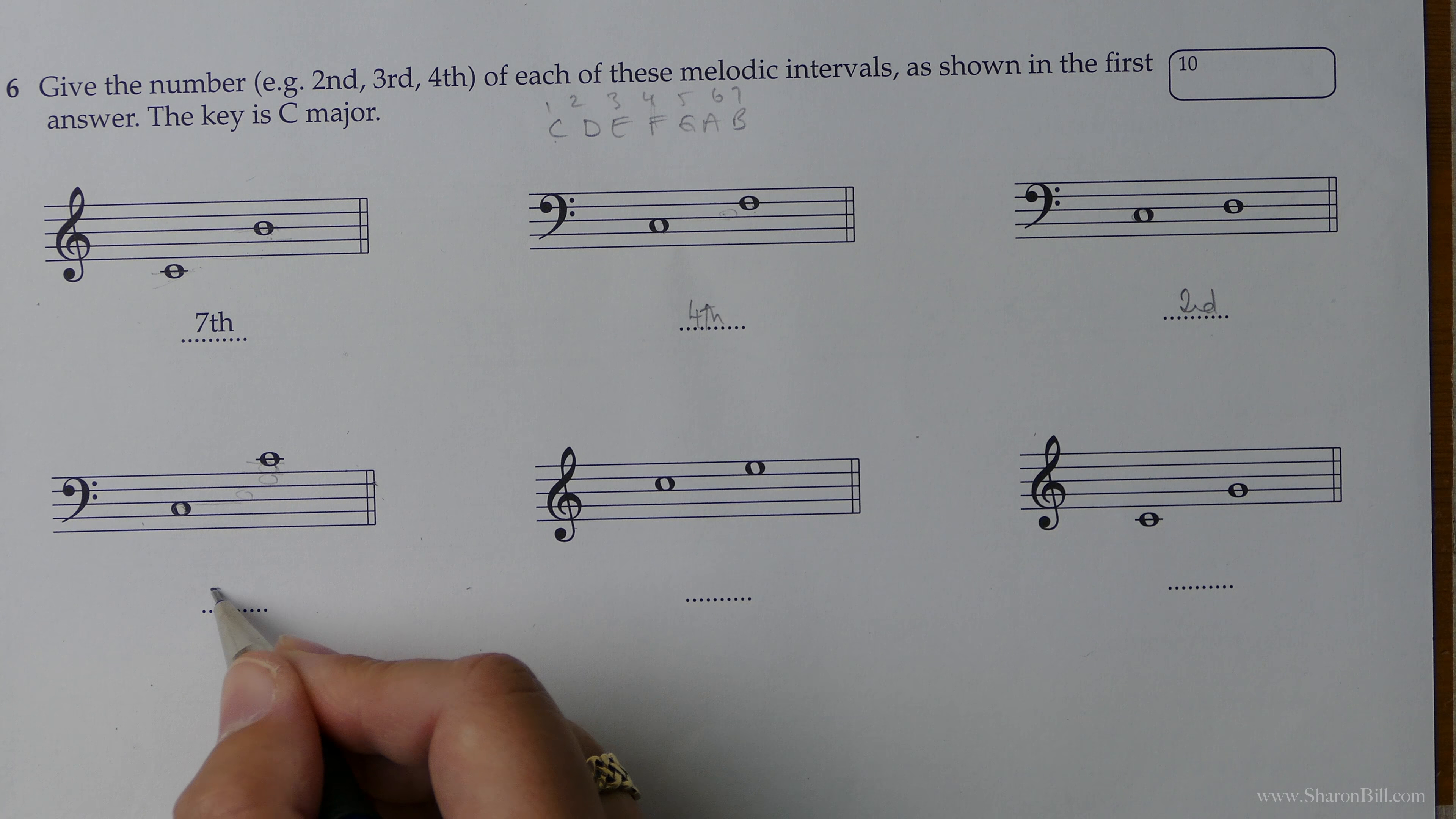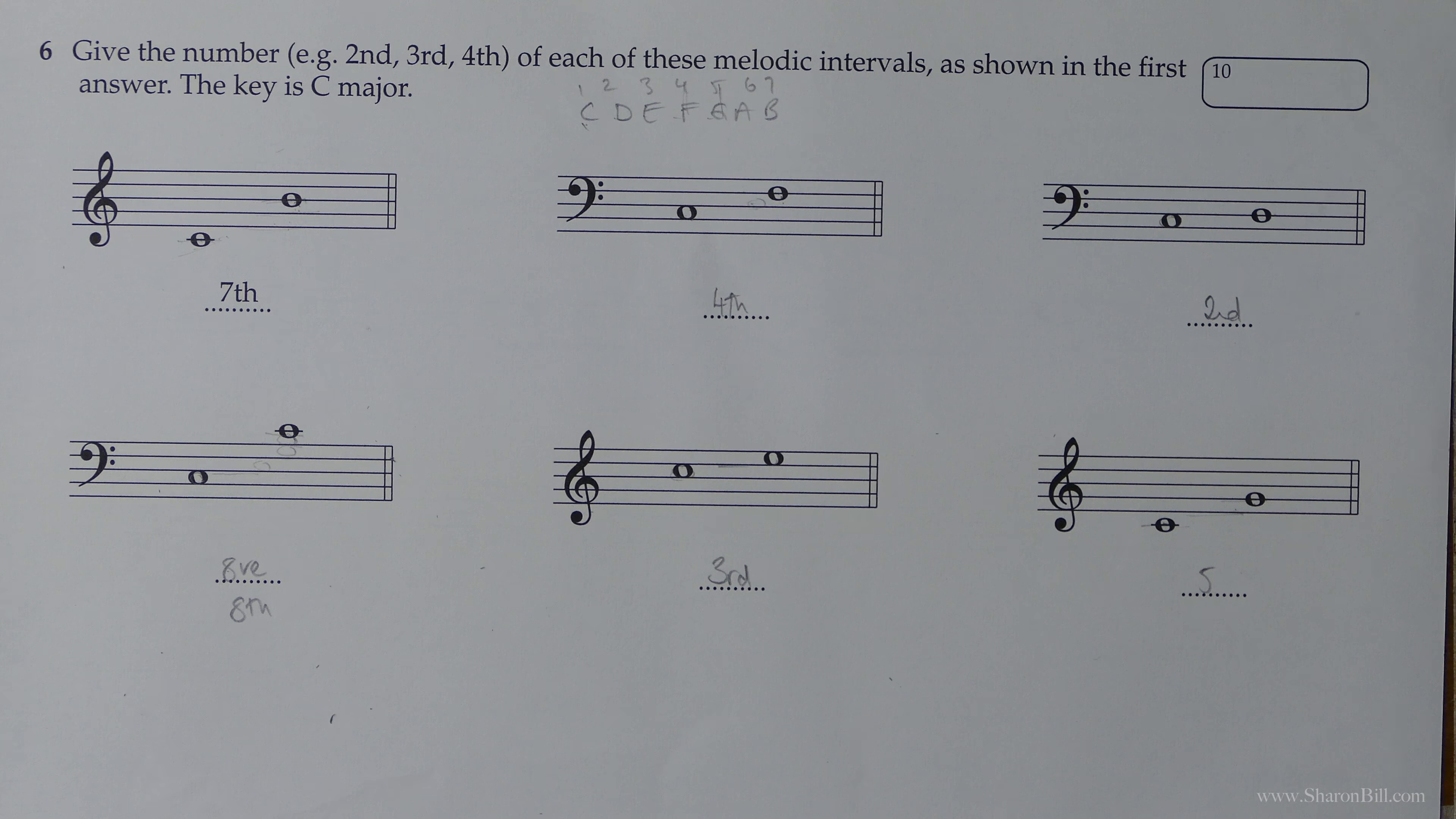So here we count in space, line, space. One, two, three. We've got a third. And then one, two, three, four, five. That's a fifth. And you can from C to G, one, two, three, four, five is a fifth.